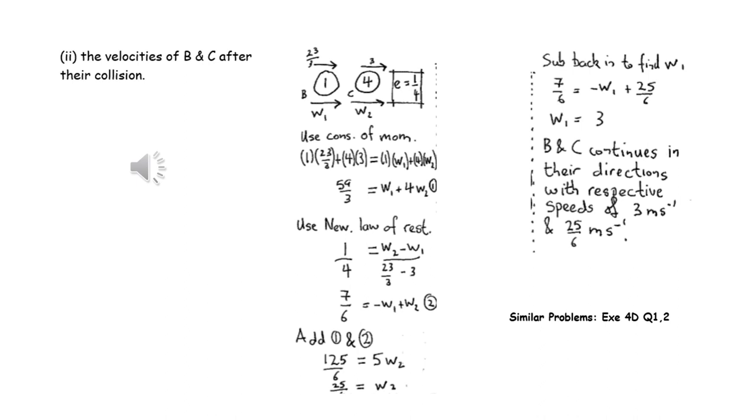Now that we know the velocity of B after it's collided with A, we know that that's then the initial velocity for its collision with C, and once again, we can apply conservation of linear momentum and Newton's experimental law to create another two equations with two unknowns, which can be solved simultaneously.